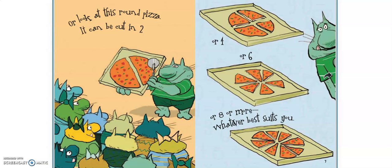Or four, or six, or eight, or more — whatever best suits you. So if you cut it into four it would be called fourths, and if it were cut into six it'd be sixths. Hard to say — it'd be a sixth. And for eight it would be called eighths.